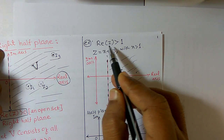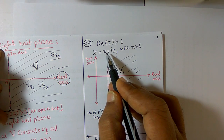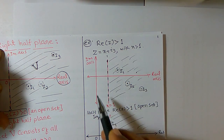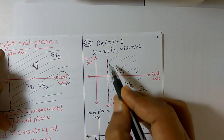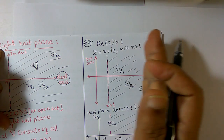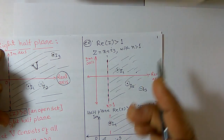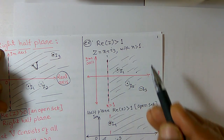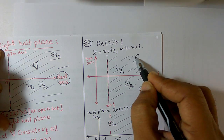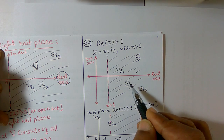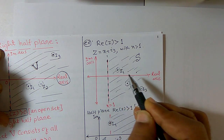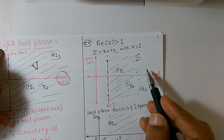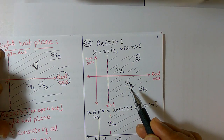Consider another example: real part of z is greater than 1. Here z is a complex number of the type x + iy with x greater than 1. On the real axis and imaginary axis, you can draw the line x = 1. The right-hand side of x = 1 is an open set. You can take any complex number of the type x + iy with x greater than 1. If we call this set S, with z1 and z2 belonging to S, construct open disks around z1, z2, and z3 — all these points are in S. Therefore, real part of z greater than 1 is an example of an open set.